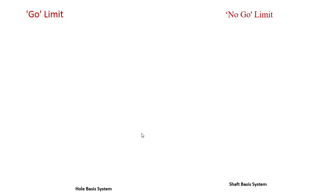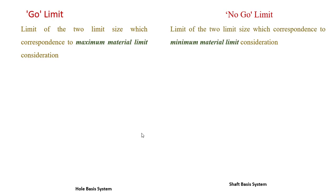Let's see the differences and comparison between go limit and no-go limit. Go limit is the limit of the two limit size which corresponds to maximum material limit consideration. No-go limit is a limit of two limit size which corresponds to the minimum material limit consideration.